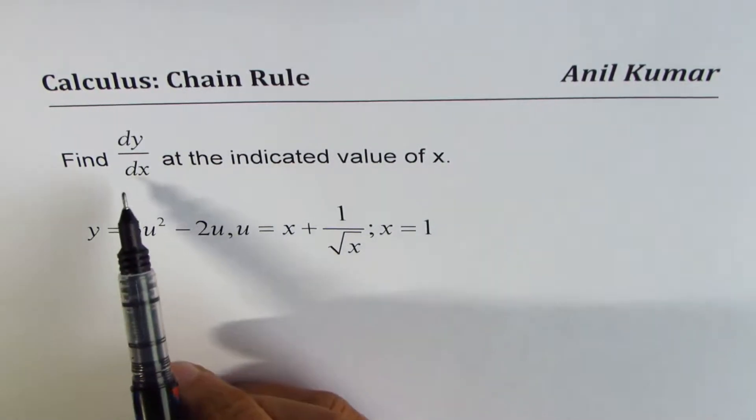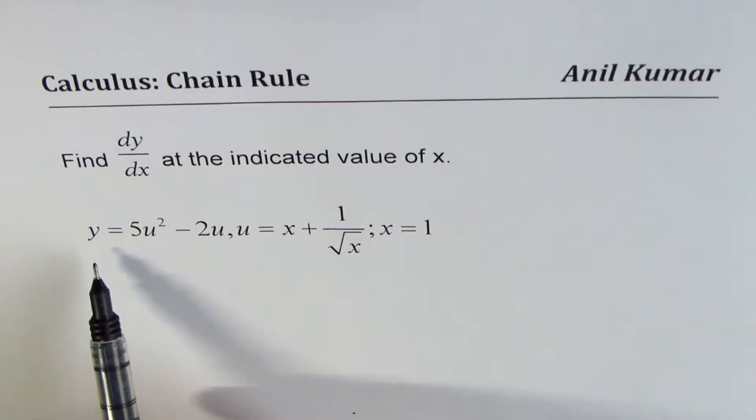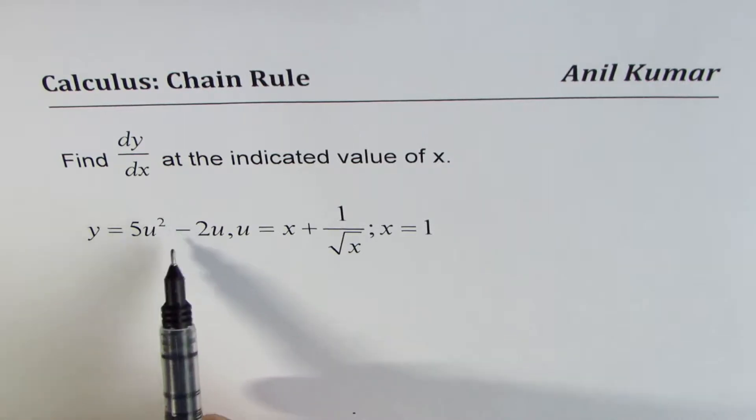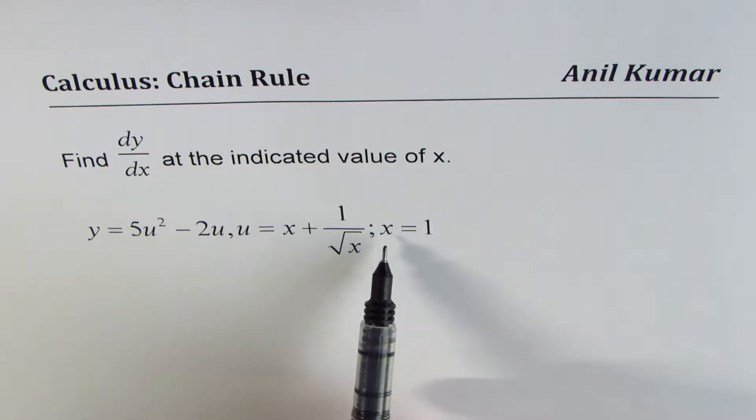The question here is, find dy/dx at the indicated value of x. The function is y equals 5u squared minus 2u, where u equals x plus 1 over square root x. And the point of interest is x equals 1.